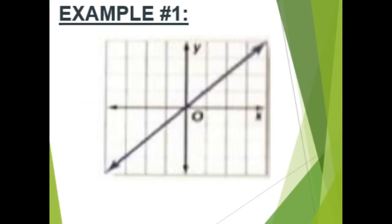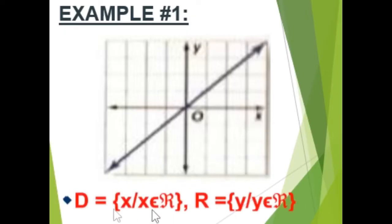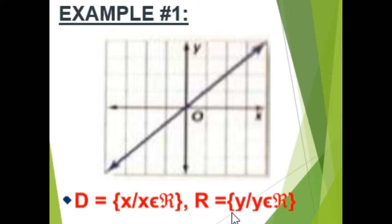Let's take an example. Example number one: from this graph, you will be able to determine the domain and the range. The first graph is a line that can be extended in both directions. So the domain is the set of all real numbers, the same as the range. The domain of the function is the set of all x such that x is an element of the set of real numbers. The same with the range: the range of the function is the set of all y such that y is an element of the set of real numbers.